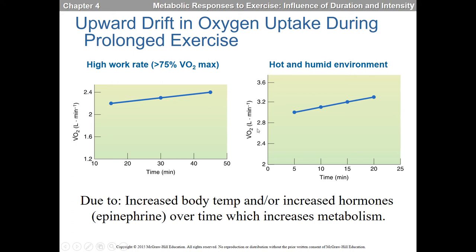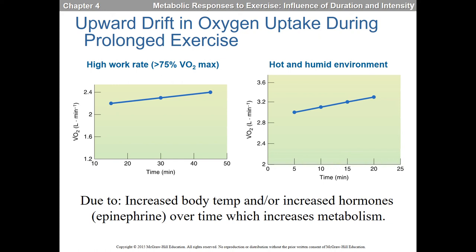I want you to understand that over time exercise actually becomes more intense relative to VO2 max. If you start at 75% of your VO2 max, later it might feel like 80–85% even at the same speed. That is partially why people slow down — marathon runners, for instance, slow their pace as they fatigue to maintain approximately the same relative VO2 max throughout the race.